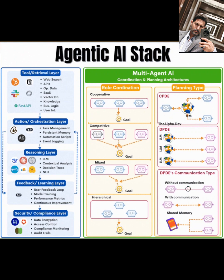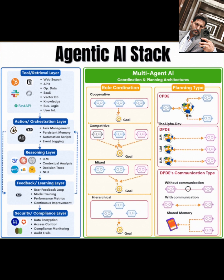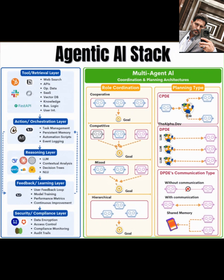First, let's start with the tools/retrieval layer. This is the foundation where your AI system interfaces with external resources. We're talking about web search capabilities, API integrations, operational data, and SaaS platforms. You'll also want to leverage vector databases for efficient embedding storage and retrieval, alongside knowledge bases for structured data. For development, tools like FastAPI can help you build robust user interfaces to interact with these resources. This layer ensures your agents have access to real-time, relevant data to act upon.